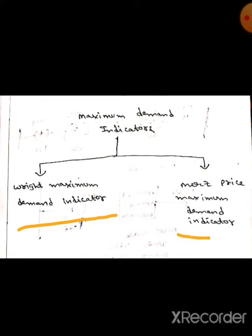And now the Merz price maximum demand indicator. Here in the Merz price maximum demand indicator, it can write either maximum current or power taken by consumer in a given period. Here this Merz price maximum demand is more accurate than the rate maximum demand indicator.